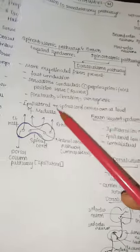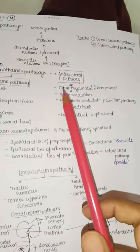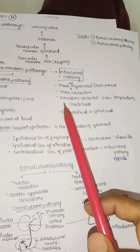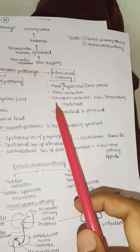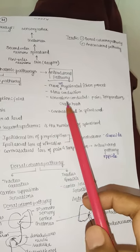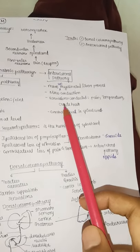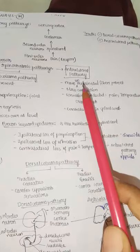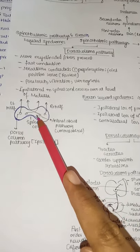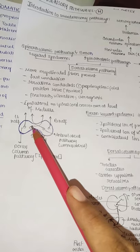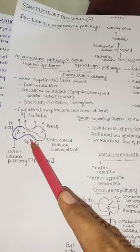The anterolateral pathway has unmyelinated fibers — slower conduction. Sensations conveyed are pain, temperature, and crude touch. This pathway is contralateral in the spinal cord — it crosses to the opposite side within the spinal cord itself, unlike the dorsal column which crosses at the medulla.